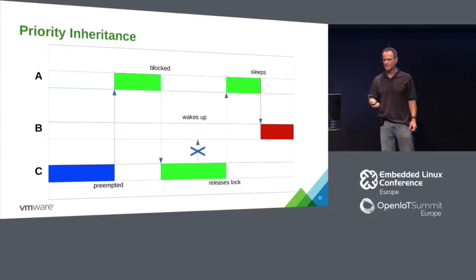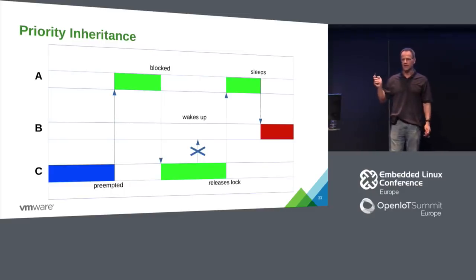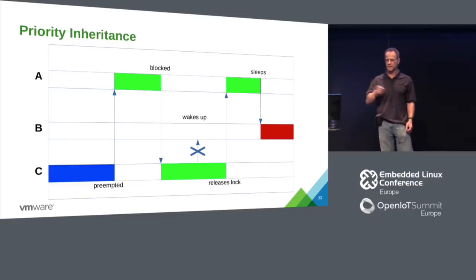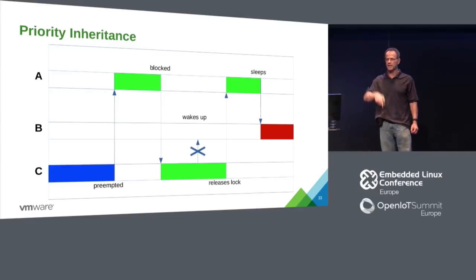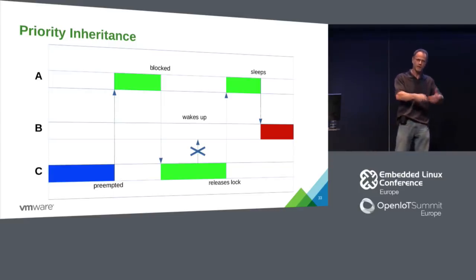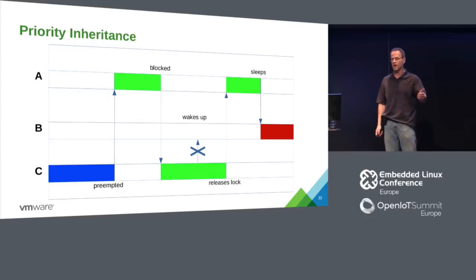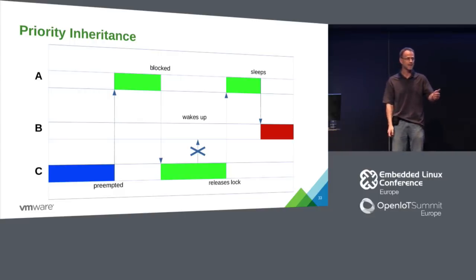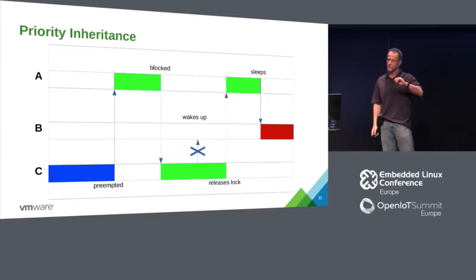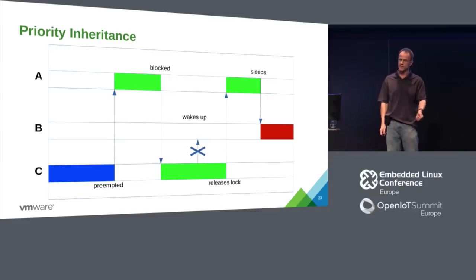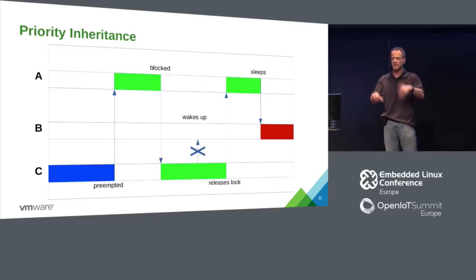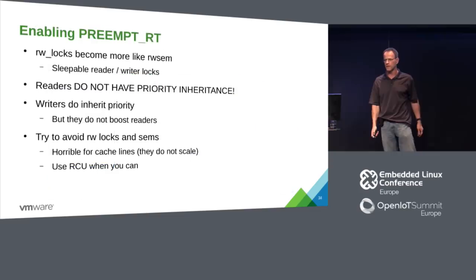What happened: the low-priority process woke up, grabbed the lock, got preempted. The bus manager tried to grab the lock, had to sleep. Then an intermediate-priority process came in and ran for a long time, preempting everything. The bus management stopped, the watchdog timer fired, and the system rebooted. The fix was a simple command uploaded to turn on priority inheritance for that lock, and the resets stopped. With priority inheritance, the low-priority task inherits the high-priority task's priority, finishes quickly, and releases the lock.